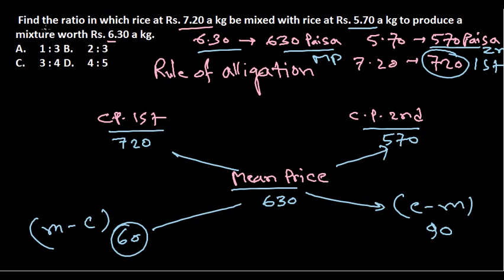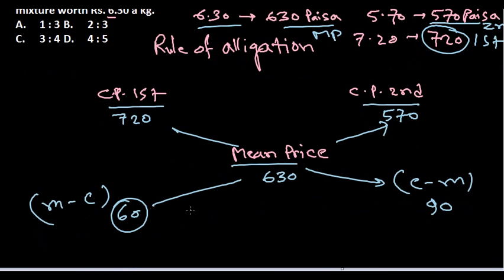To produce it, find the ratio in which we can sell that. So the ratio is, we get the value 60 and 90. So the ratio required here is 60 is to 90.